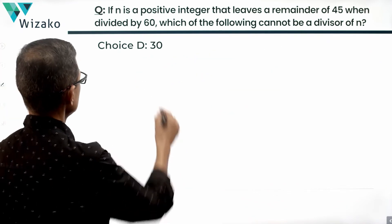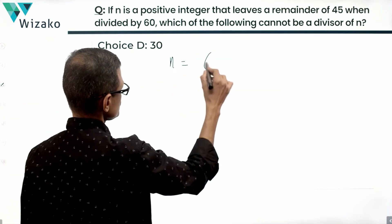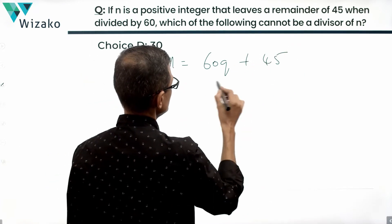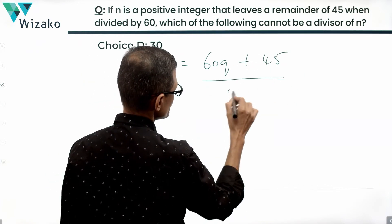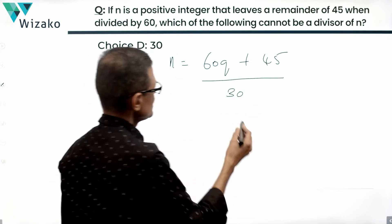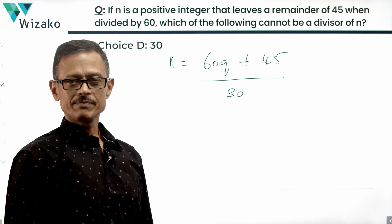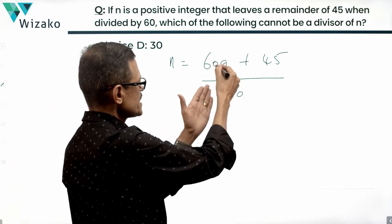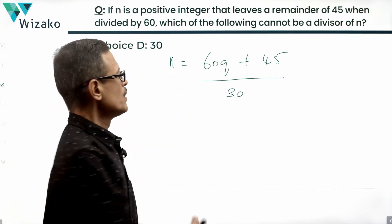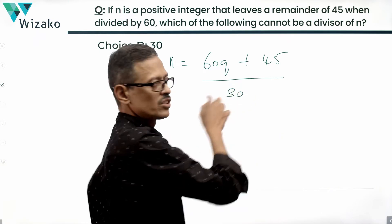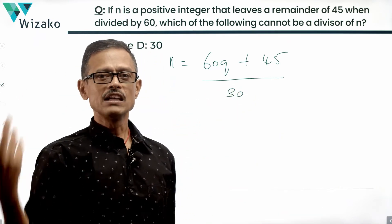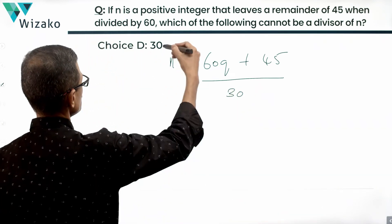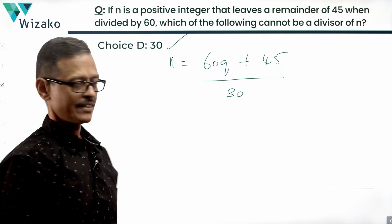Answer option D: we have n = 60q + 45. Is it divisible by 30? 60 is divisible by 30, so all 60q's will be divisible by 30. However, 45 is not divisible by 30, so the sum will not be divisible by 30. Therefore, answer option D is the correct answer to this question.